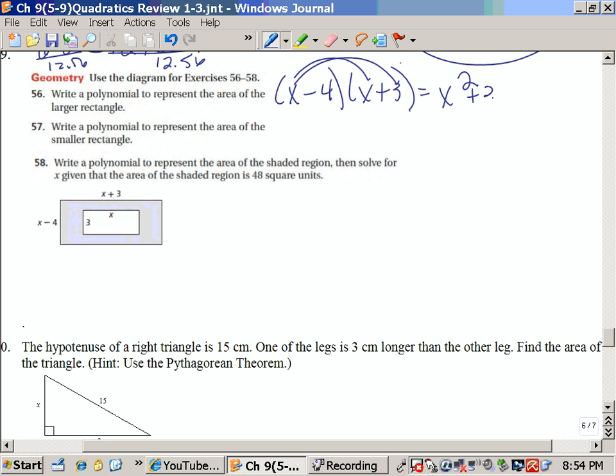x times x is x to the second. x times 3 is 3x. Negative 4 times x is negative 4x, and negative 4 times 3 is minus 12. Combining my x's, I am left with x squared minus x minus 12.